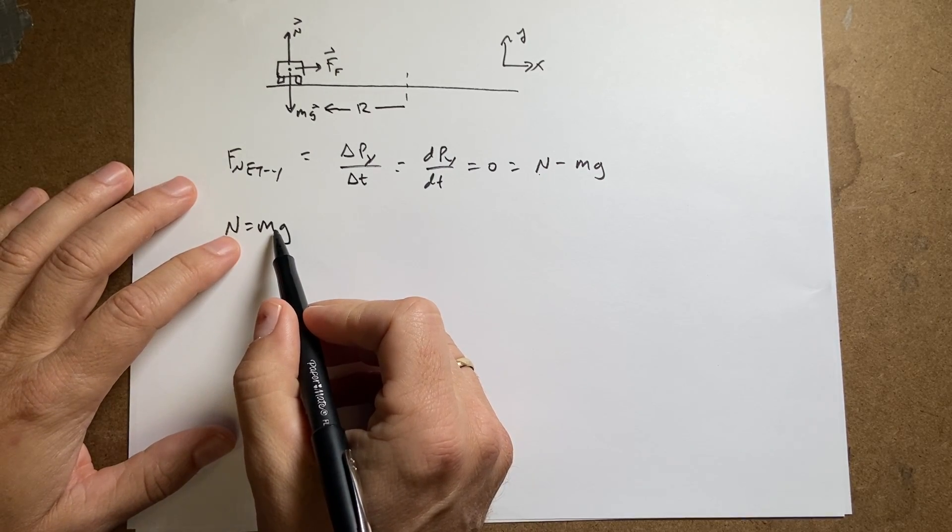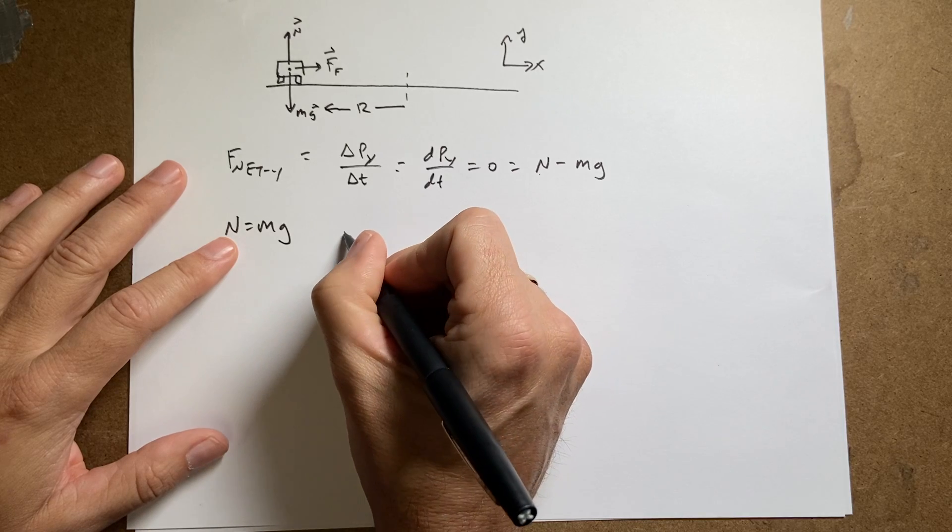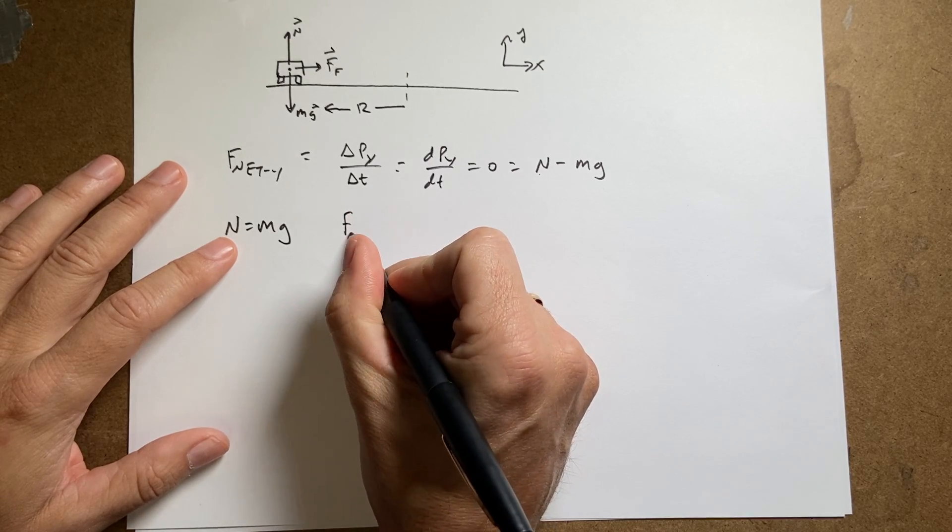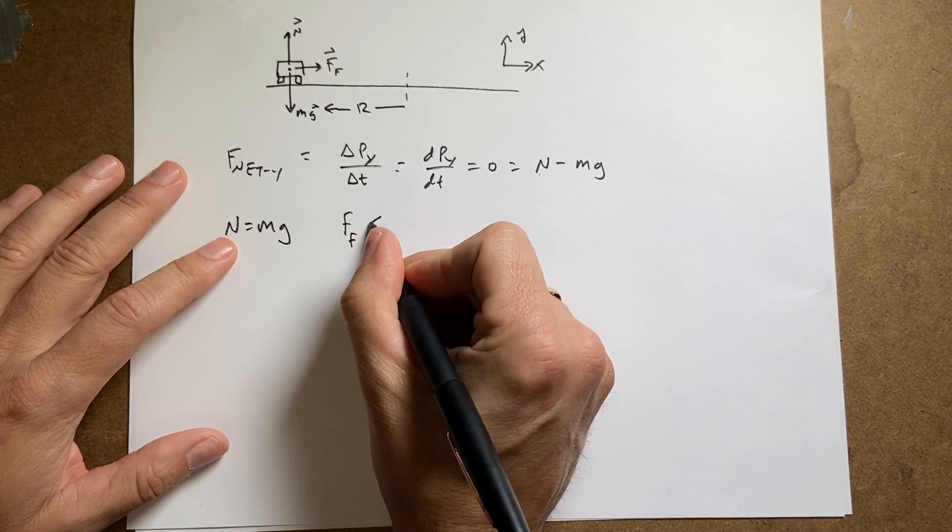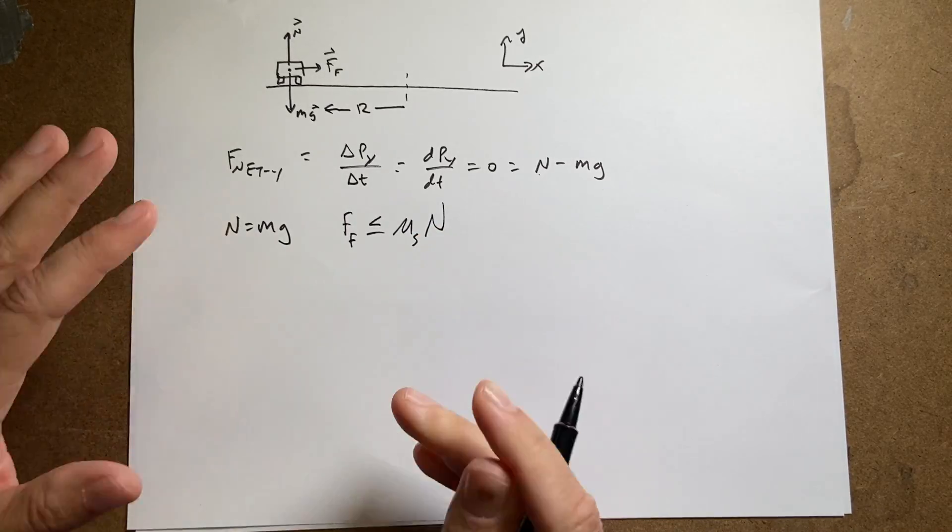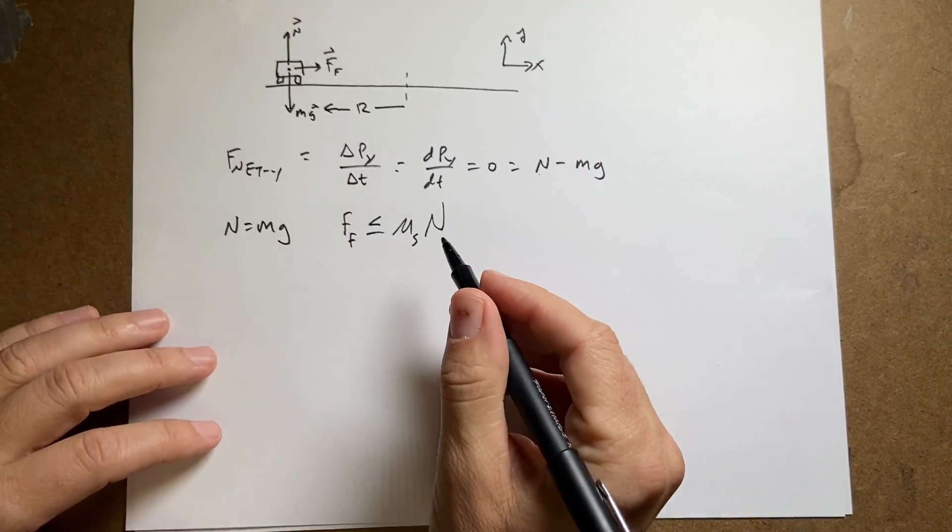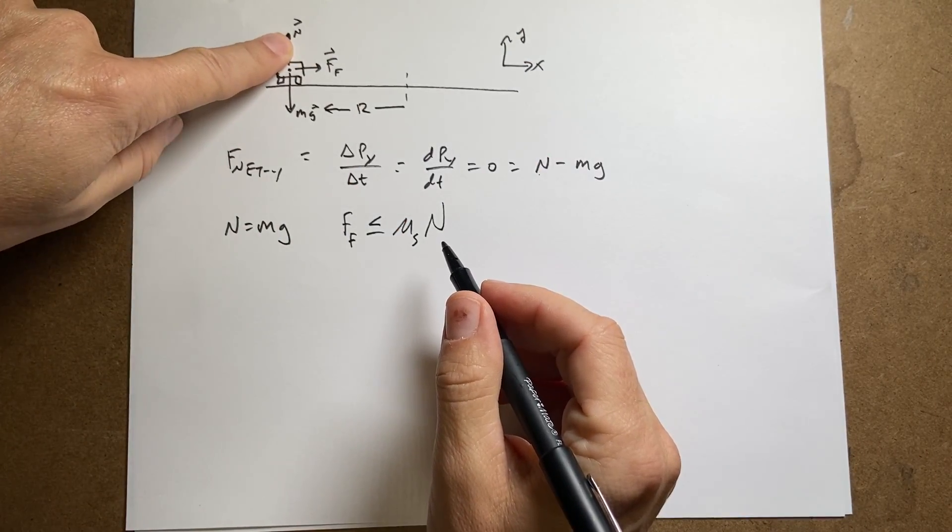And why do we care about that? Well, we care about that because I need that for my model of friction. The magnitude of a friction force for static friction is less than or equal to the coefficient of static friction times the normal force. So the harder these two surfaces are pushed together, the greater the friction force between them. So I need to know n. And I have n.